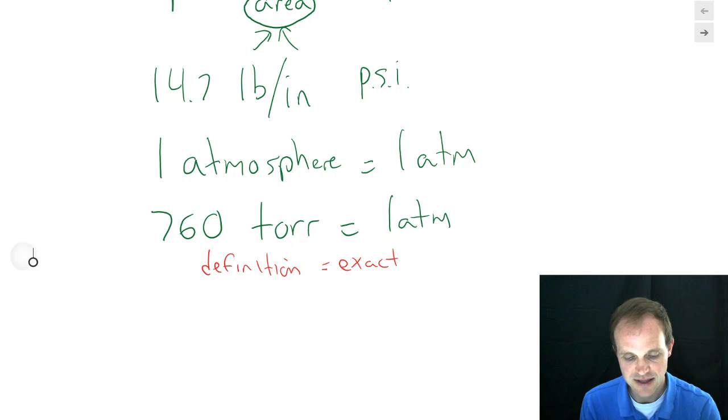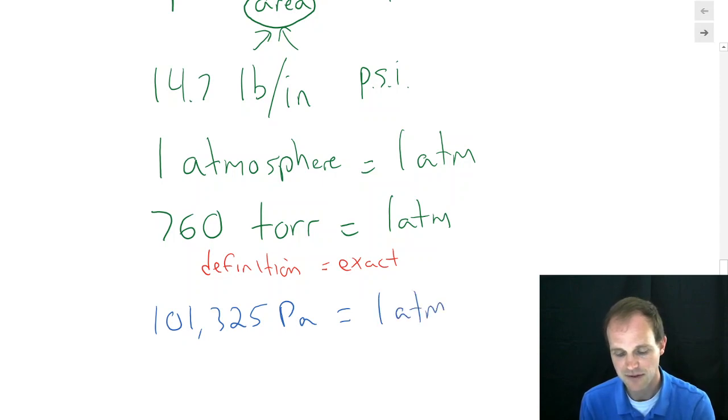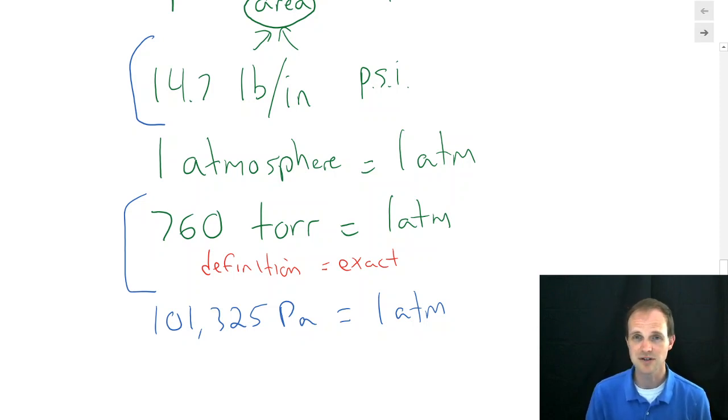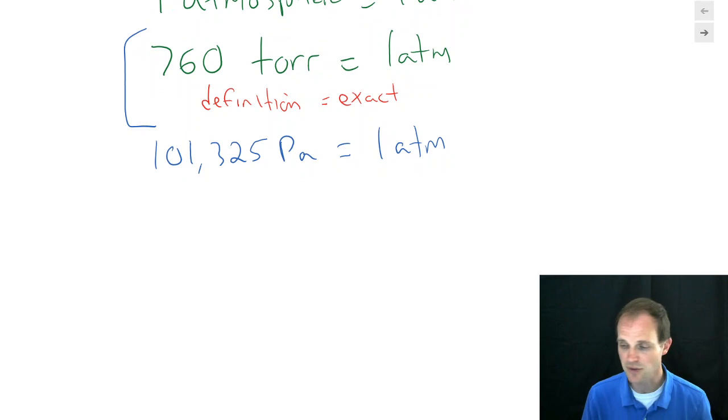One other conversion that we're going to run across not too often in this class is that there are 101,325 pascals in one atmosphere. Again, you don't have to worry about that one, but I just want to point that out to you in case you ever run across it. The one we're going to use primarily in this class is both Torr and atmosphere, both of which are very commonly used in chemistry. Pounds per square inch is often used in the U.S., but not too much here. So we might do one or two conversions with it on the homework, but we won't see it too much beyond that.